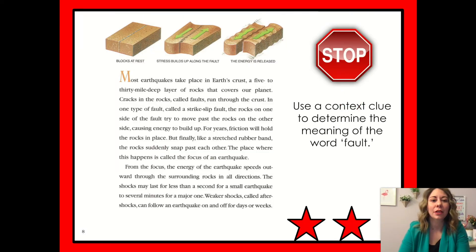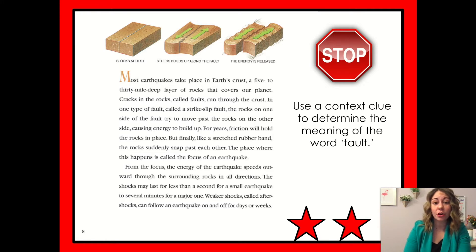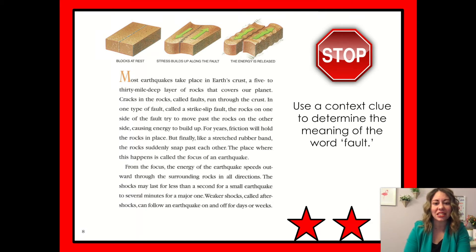Most earthquakes take place in Earth's crust, a 5 to 30 mile deep layer of rocks that covers our planet. Cracks in the rocks, called faults, run through the crust. In one type of fault, called a strike-slip fault, the rocks on one side of the fault try to move past the rocks on the other side, causing energy to build up. For years, friction will hold the rocks in place. But finally, like a stretched rubber band, the rocks suddenly snap past each other. The place where this happens is called the focus of the earthquake. From the focus, the energy of the earthquake speeds outward through the surrounding rocks in all directions. Weaker shocks, called aftershocks, can follow an earthquake on and off for days or weeks.